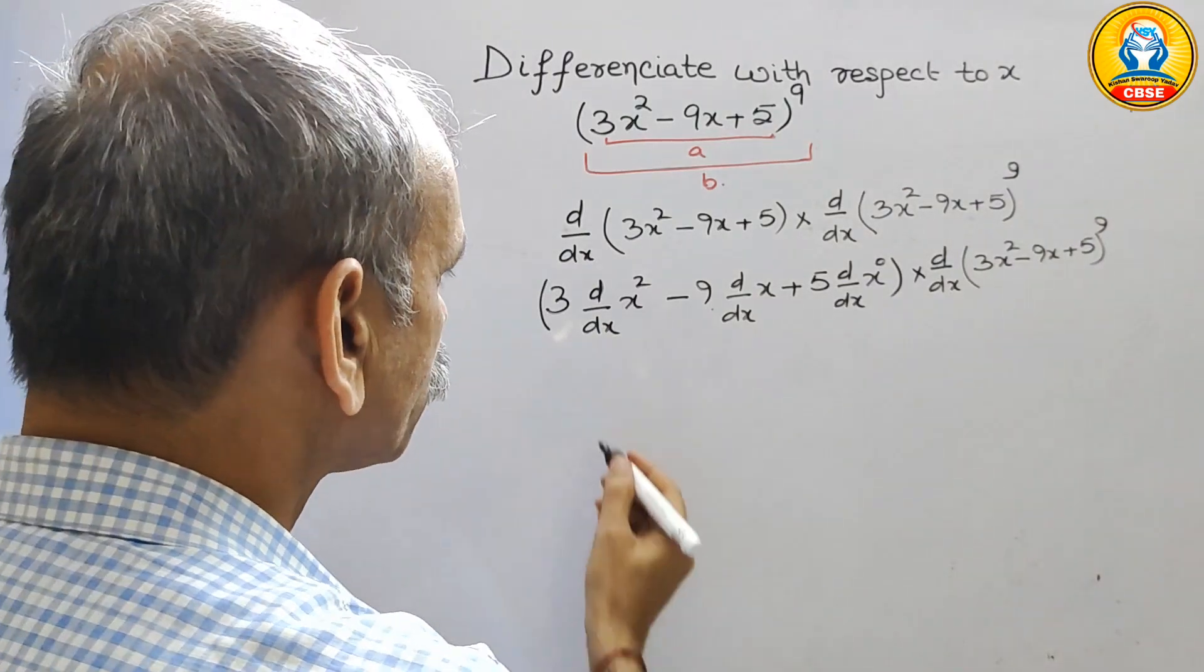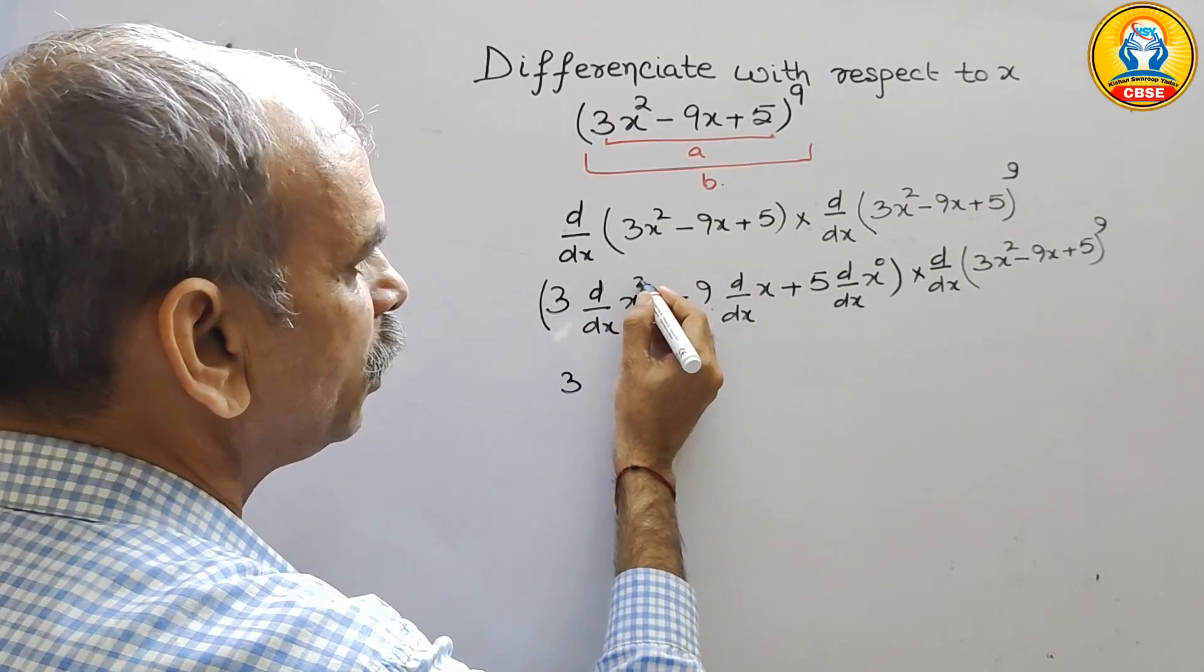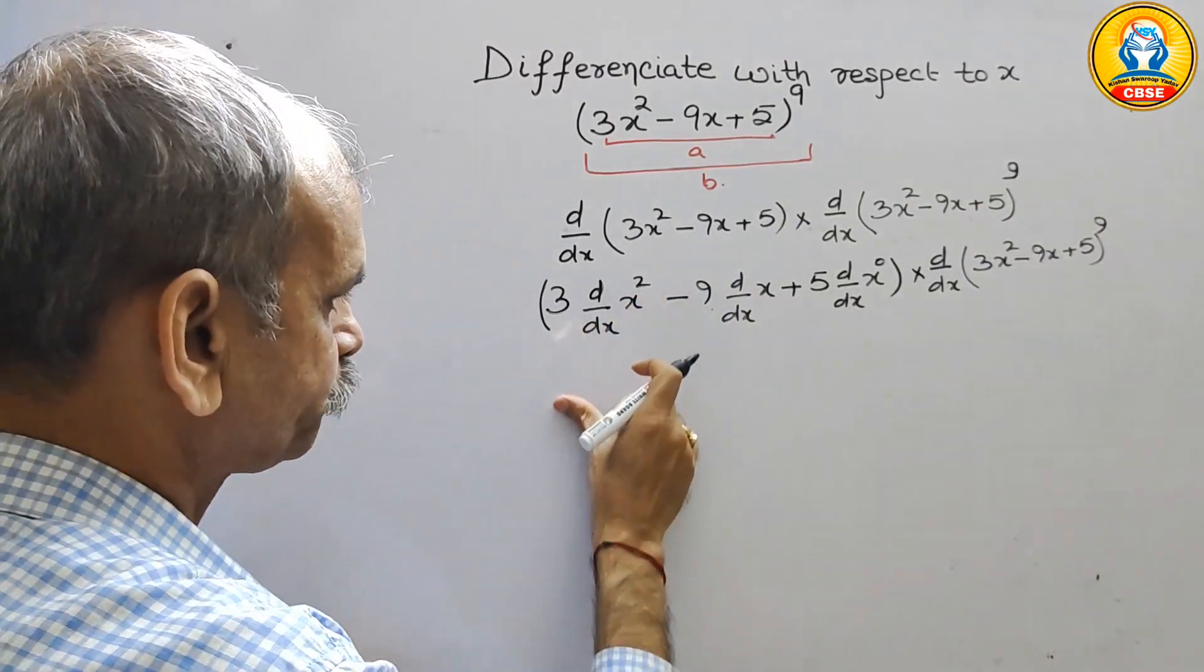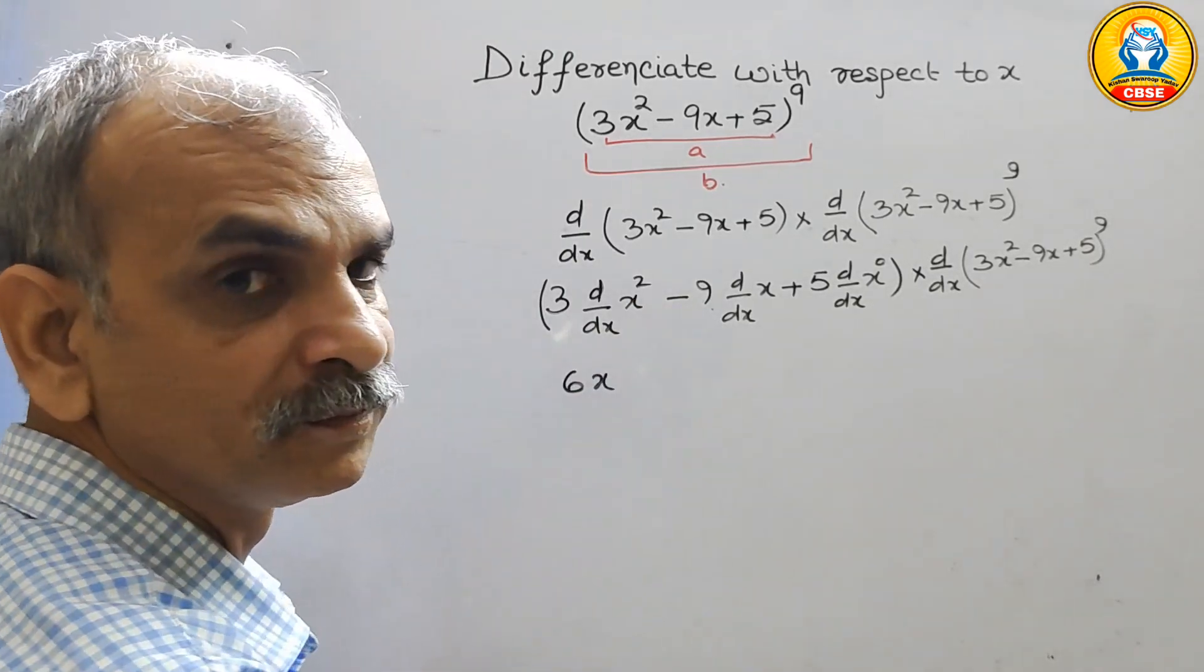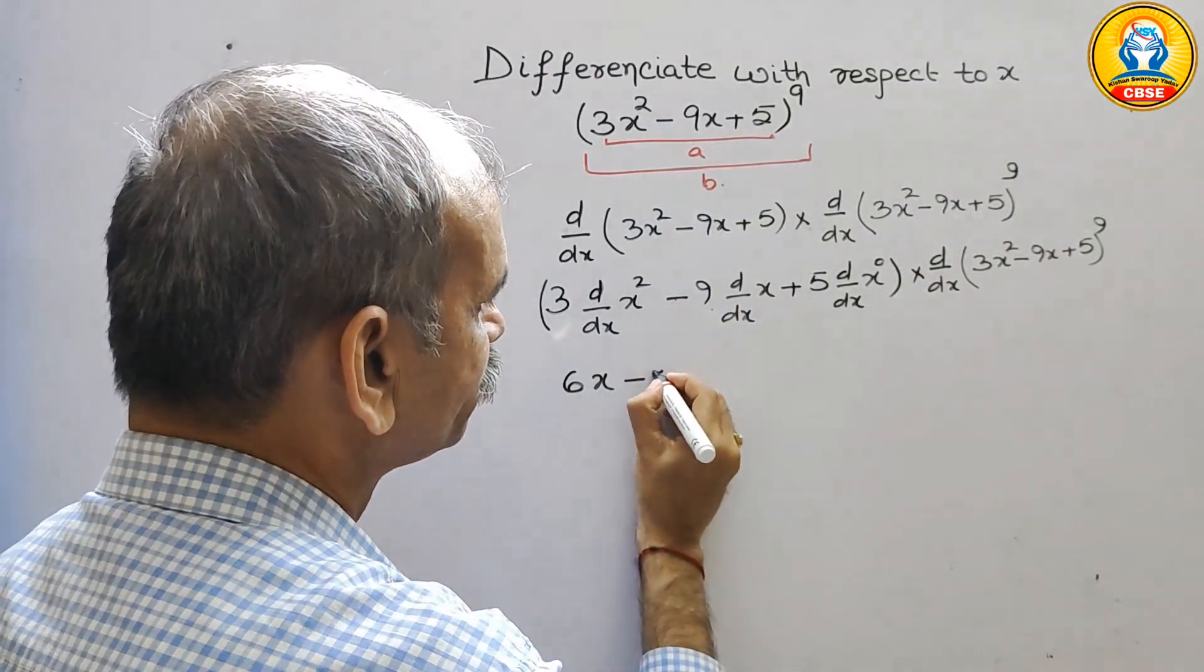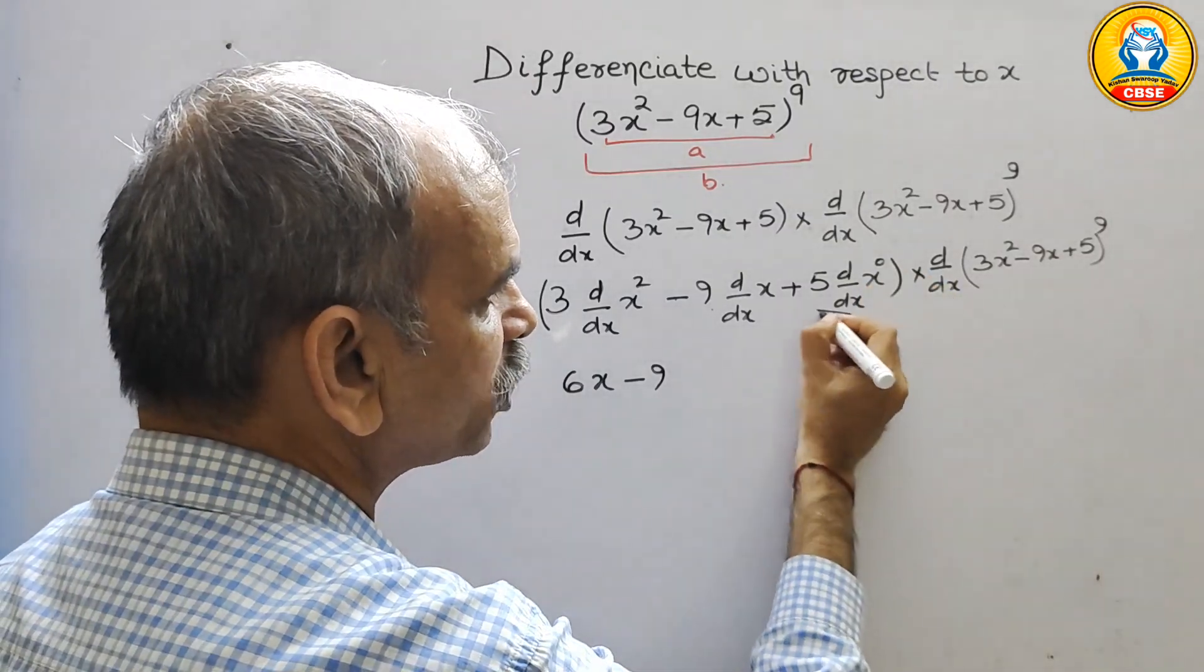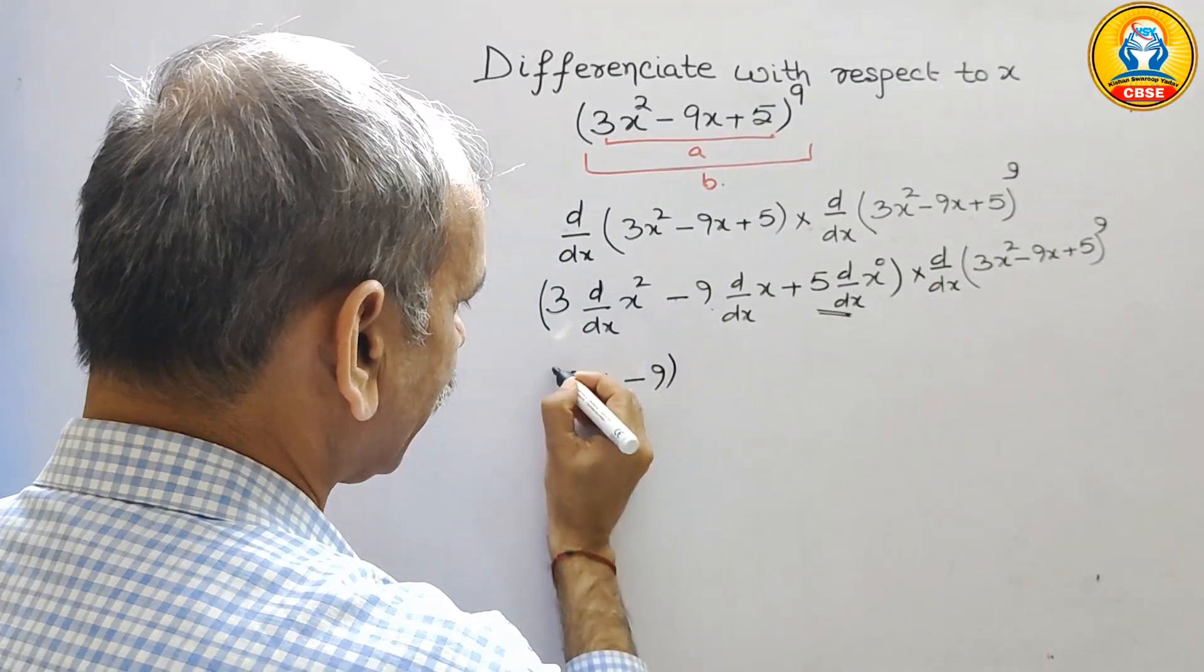Now differentiate. So this will become your 3 into 2 is 6, 6x, and this will become minus 9, and here power is 0, therefore this will become 0. So this is in one bracket.